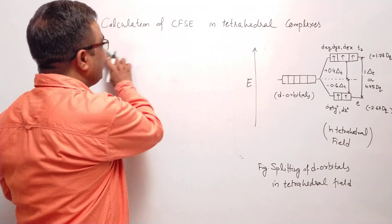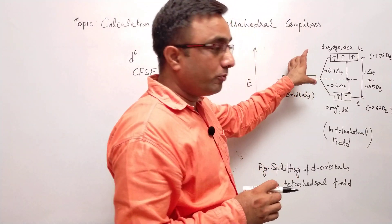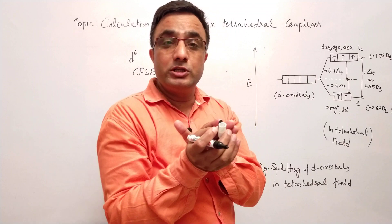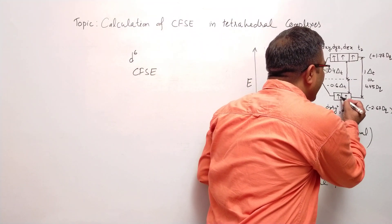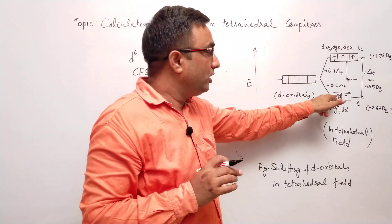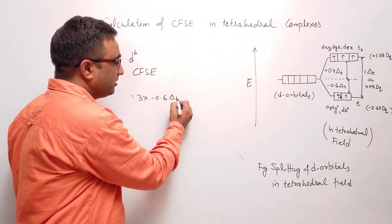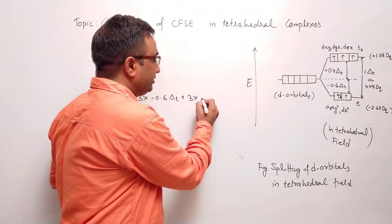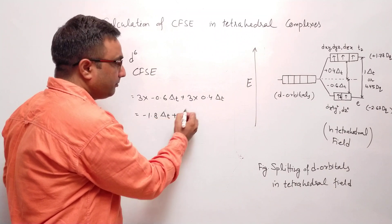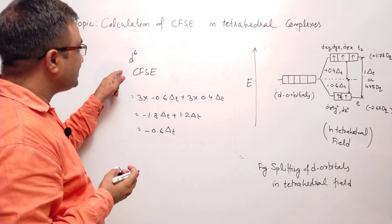Let's calculate for D6. If six electrons are there, five electrons occupy the first five positions — two at the lower energy level and three at the higher energy level. The sixth electron will pair up in the lower energy level, as there is no other choice. Now three electrons are in the lower energy level: 3 × (−0.6 delta T), plus three electrons at the higher energy level: 3 × (+0.4 delta T). This gives −1.8 delta T + 1.2 delta T. This is the CFSE value for D6.